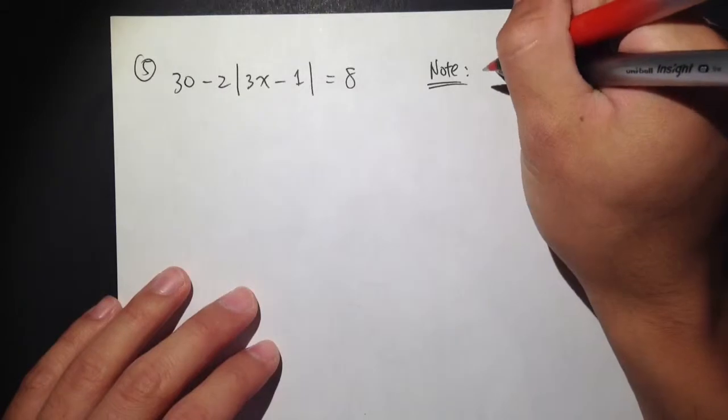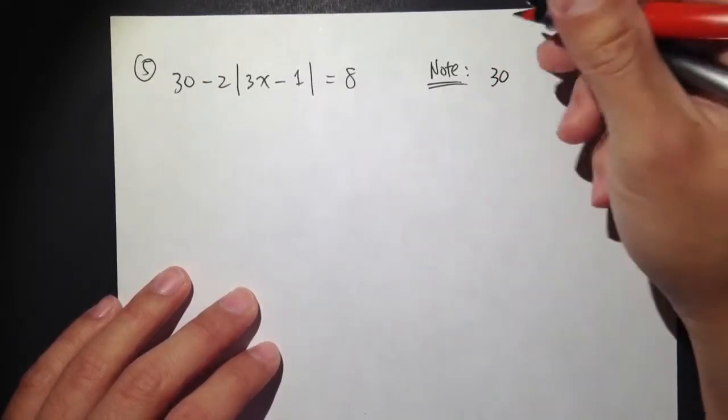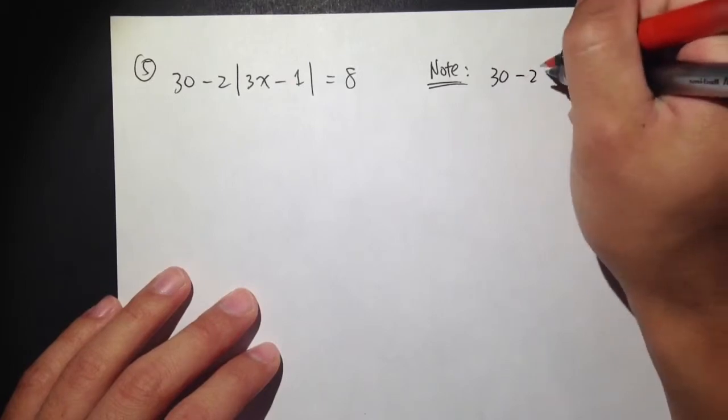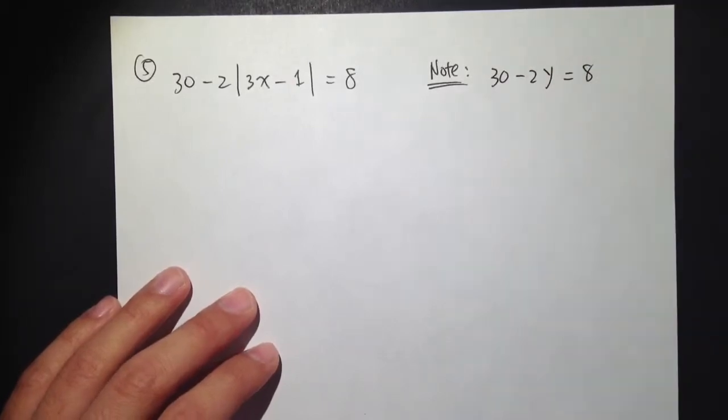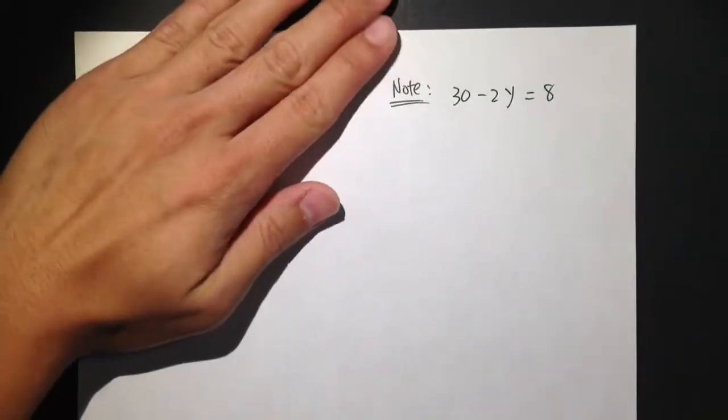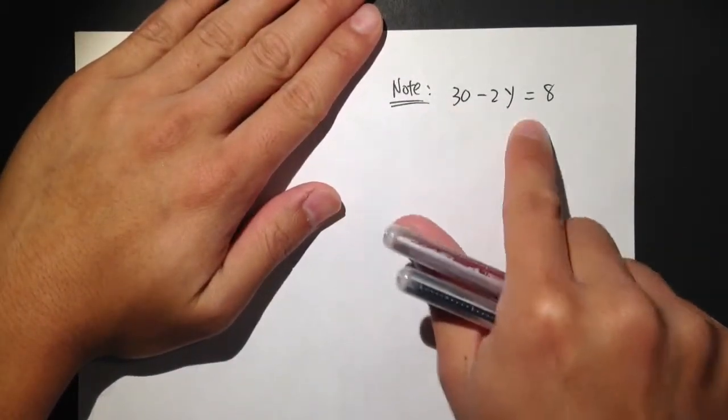Let me ask you, how would you solve for the equation 30 minus 2y equals 8? Just ignore this for a minute. 30 minus 2y is equal to 8.